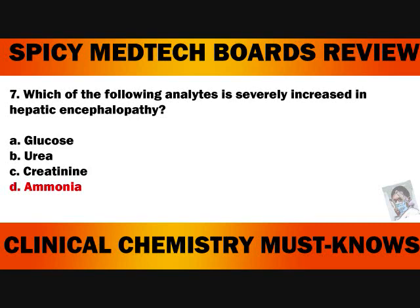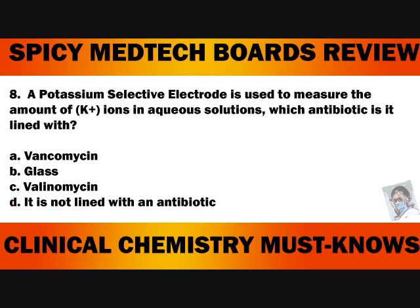Ammonia is a body waste product. In healthy individuals, it is converted by the liver into urea. But if the liver cannot do this, ammonia levels in the body build up and may end up in the brain through the bloodstream, causing hepatic coma, which is the hallmark of hepatic encephalopathy. The answer is letter D, Ammonia.